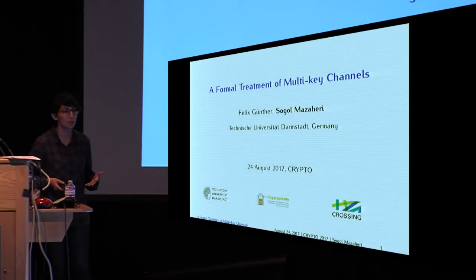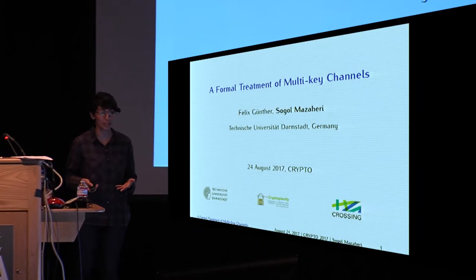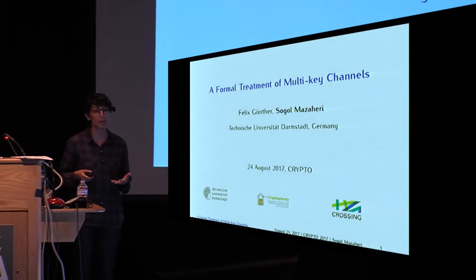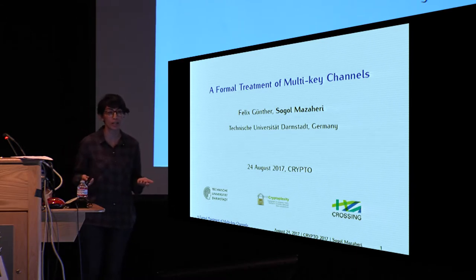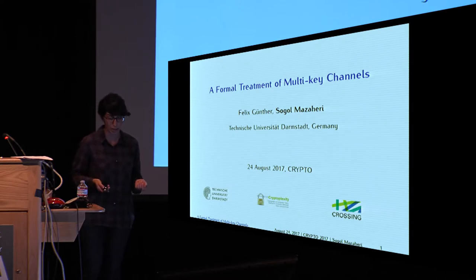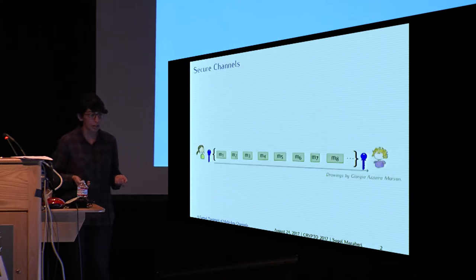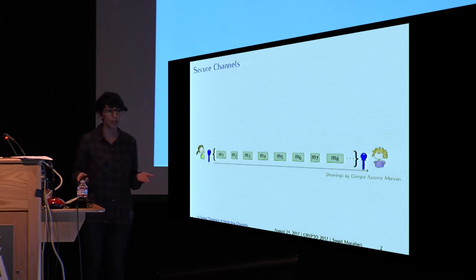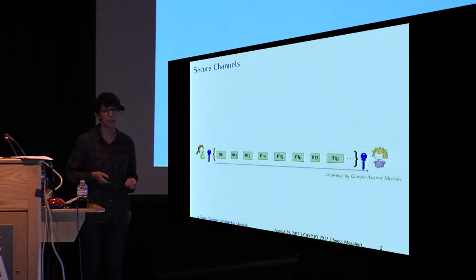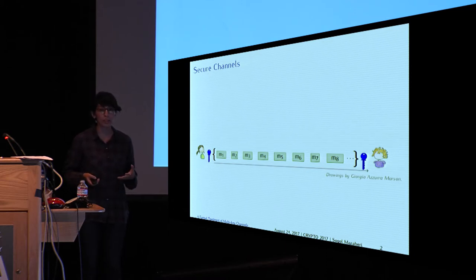This talk is about secure channels, and in particular what we call multi-key channels, where a sender and receiver can update their keys during their communication. Suppose Alice and Bob share a symmetric key and Alice wants to use that key to send some messages securely to Bob. For this purpose they need a secure channel.